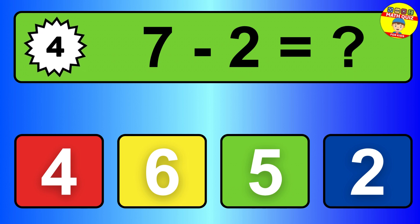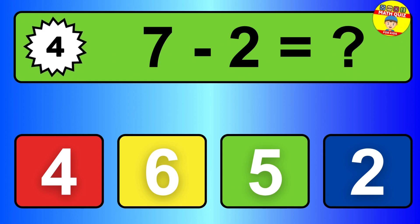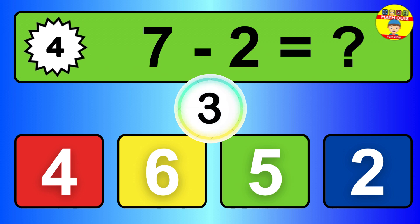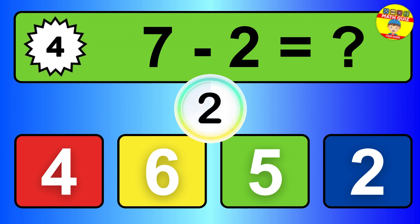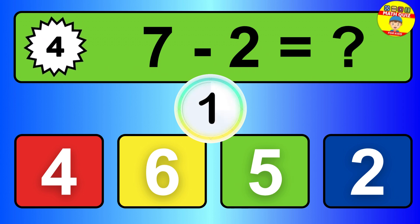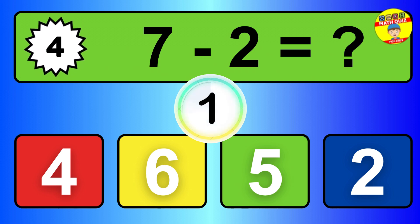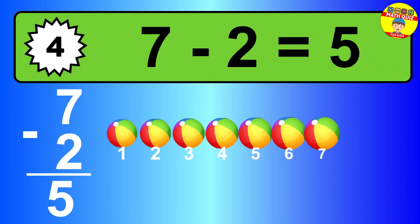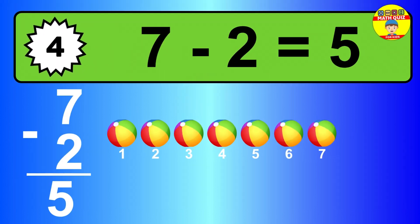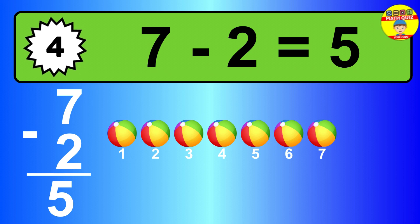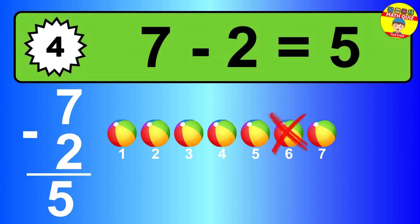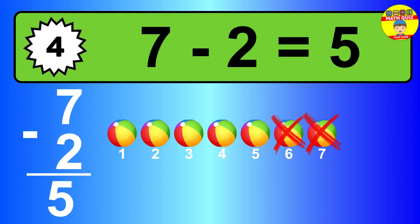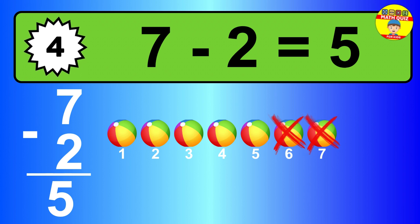Question four. Seven minus two equals what? So the answer is seven minus two is five. Let's count it. One, two, three, four, five.